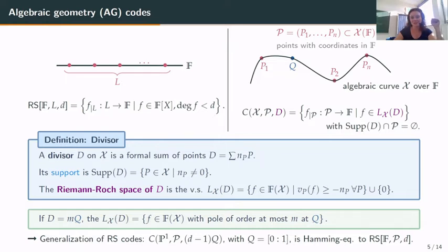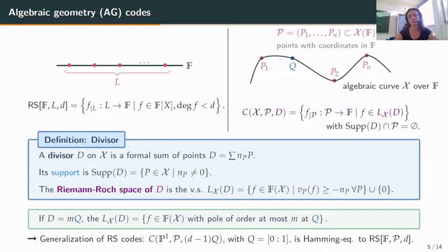So an algebraic geometry code takes functions from a Riemann-Roch space associated to D, evaluated at points P. To make everything work nicely, we suppose that the support of D is disjoint from the evaluation set. This code generalizes Reed-Solomon: if you take D equal to (d minus 1) times Q for Q a point on the projective line, you just get a Reed-Solomon code.